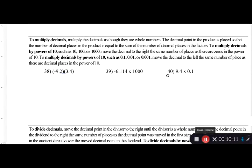For multiplying decimals: multiply as though they are whole numbers, then place the decimal point in the product so the number of decimal places equals the sum of decimal places in the factors. To multiply by a power of 10 like 10, 100, or 1000, move the decimal to the right the same number of places as there are zeros. For decimal powers of 10 like 0.1 or 0.01, move the decimal to the left.